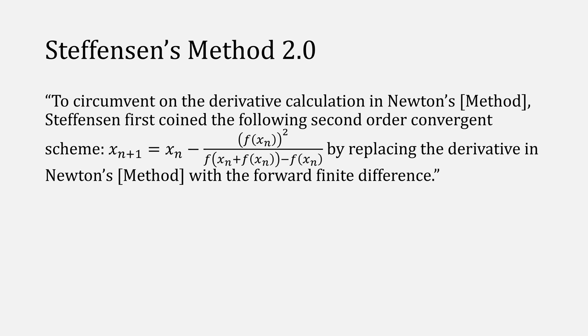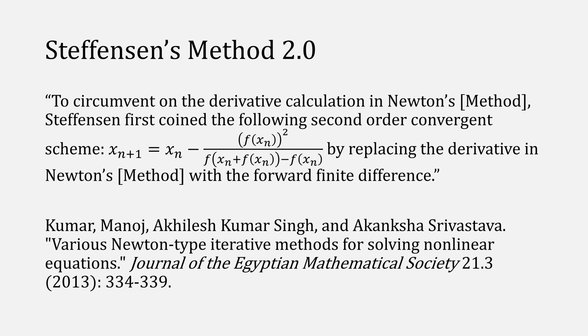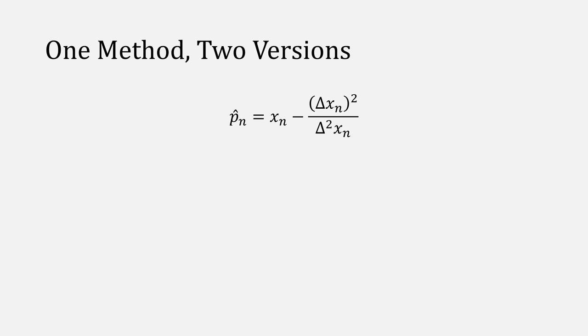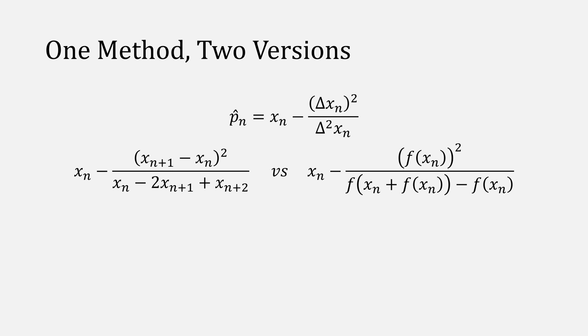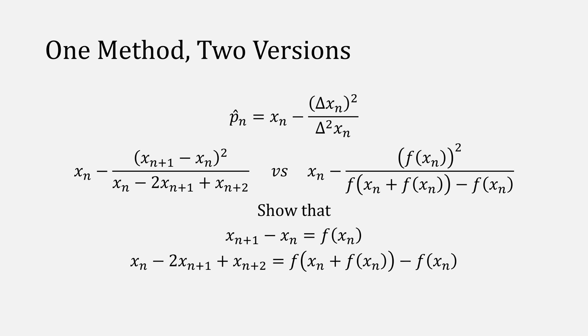There's another version of Stephenson's method that I'll simply refer to as version 2.0, and you'll see this very commonly in the literature. This example is from Kumar et al. These two versions are actually the same thing — they're both derived from Aitken's delta squared method. You'll see it either as the version on the left or the version on the right, and we'll show that these are the same thing by showing that the numerators and the denominators for both of these are the same.